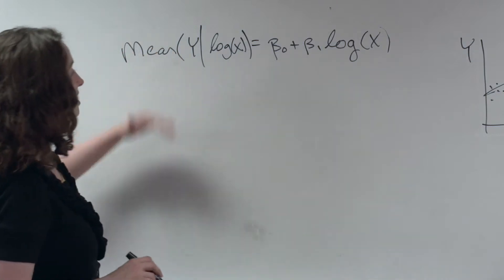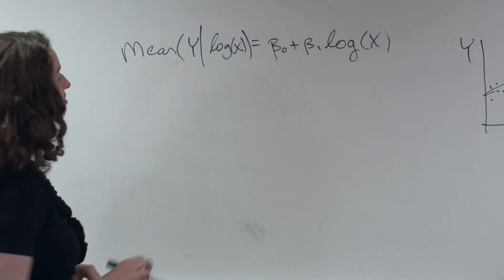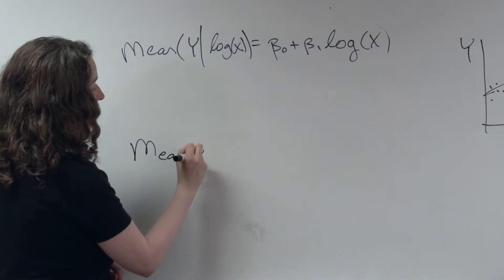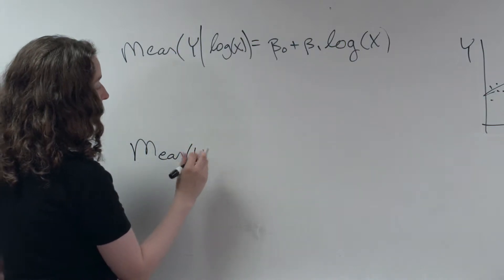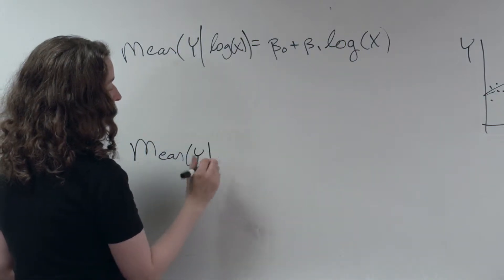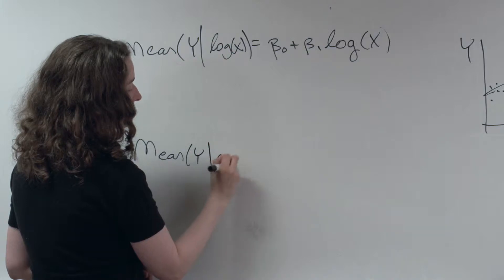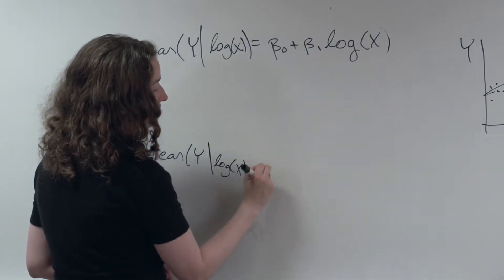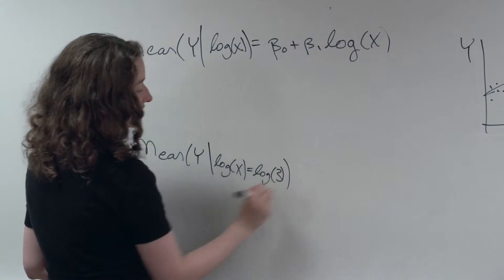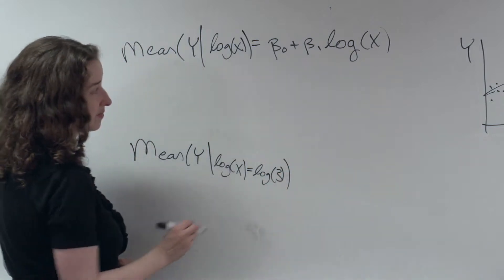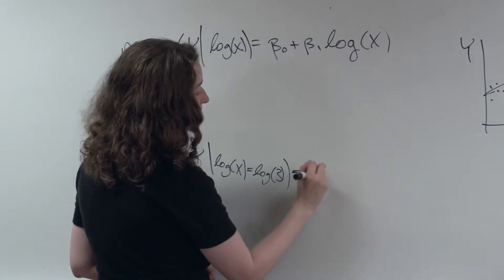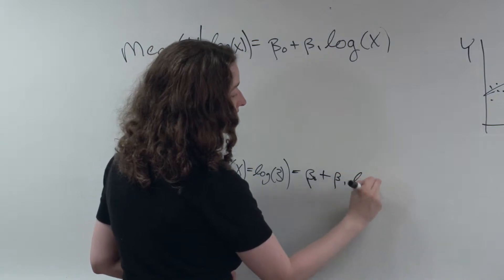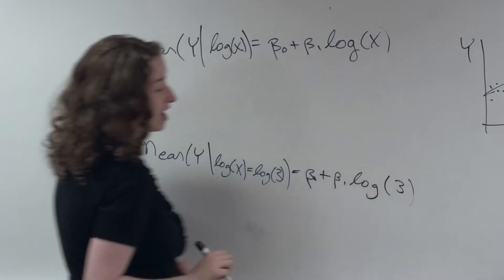So, as we did before, let's write down this equation for a particular scenario. What if I have the mean of y, given that when I say log of x, I'm referring to the log of 3 — in other words, x is equal to 3? Then I've got beta 0 plus beta 1 times log of 3.